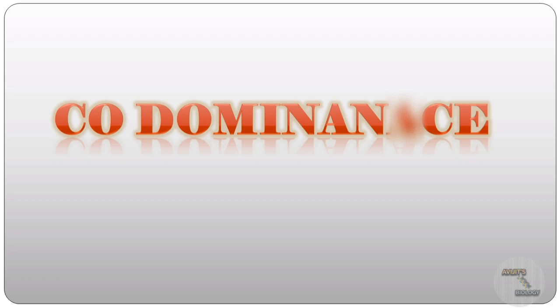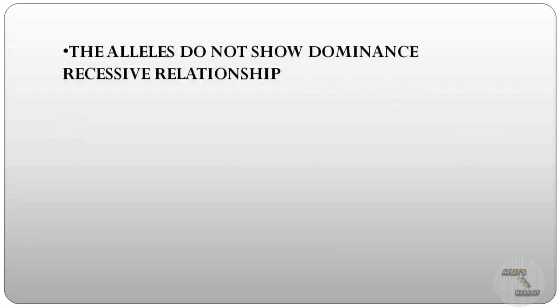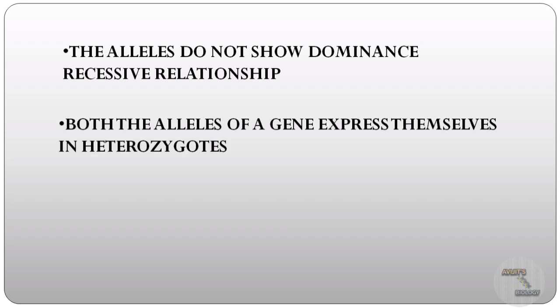Co means together, and the name co-dominance suggests that there is dominance of two alleles of a gene. Means the alleles do not show a dominance relationship. There is no allele dominant over any other allele. Here both alleles of a gene express themselves in heterozygotes.